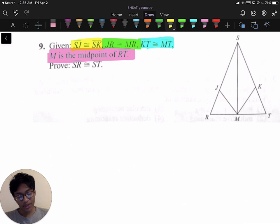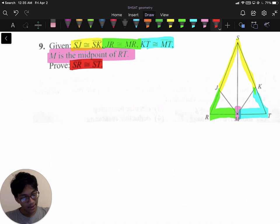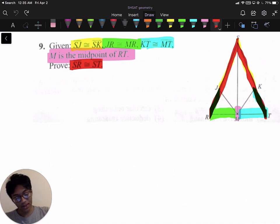So let's show that in our diagram. We know SJ is congruent to SK. We know that JR is congruent to MR, and we know that KT is congruent to MT. We also know that M is the midpoint of RT. We gotta show that SR is congruent to ST. In other words, we gotta show that this is equal to this. Those two sides are equal. How do you show that?